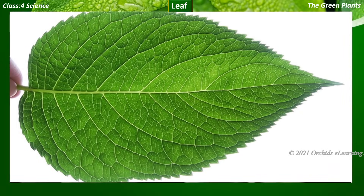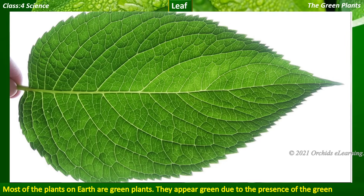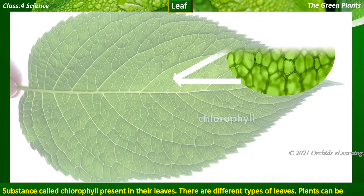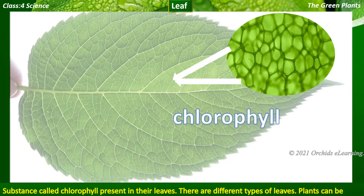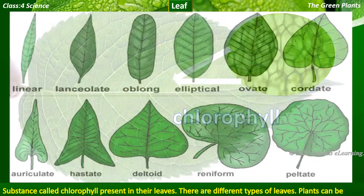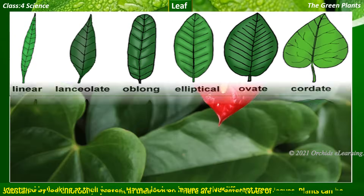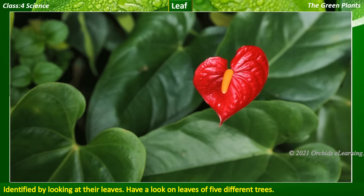Leaf. Most of the plants on earth are green plants. They appear green due to the presence of the green substance called chlorophyll present in their leaves. There are different types of leaves, and plants can be identified by looking at their leaves.